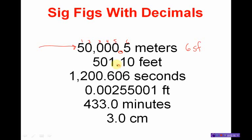Here's a decimal place, so my arrow is going to come in from the left. I hit the 5, I stop. Once I start counting, I count them all: 1, 2, 3, 4, 5. There are five significant figures.